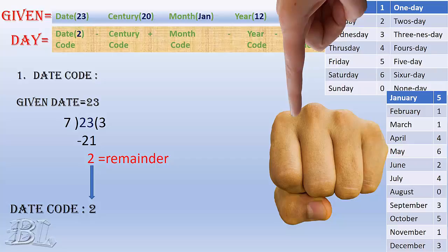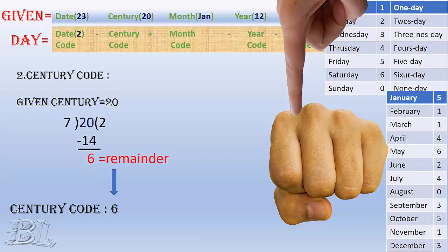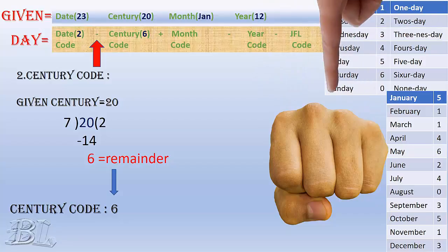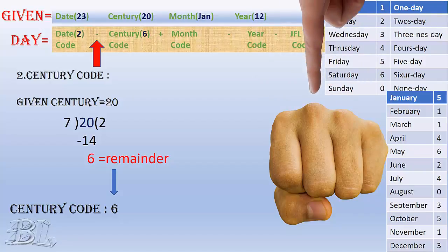Similarly, we divide the given century — that is 20 — by 7 and find the remainder to be 6, which is the century code. Since we need to subtract the century code, we go to the left for 6 steps: 1, 2, 3, 4, 5, 6.